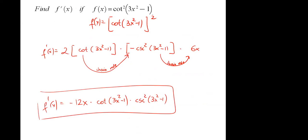For the chain rule applied to cotangent squared of (3x squared minus one): the derivative of cotangent squared is two times cotangent of the same angle — never change the angle. Then derivative of cotangent gives negative cosecant squared of the same angle, times the derivative of the inner function. This is the chain rule applied twice: derivative of the outer cotangent squared, then derivative of the inner function.